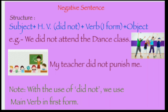Now see the structure for a negative sentence in past tense. As we have used the second form of the verb, for making it negative we need to convert it back to the first form of the verb with the helping verb 'did not.' Structure: Subject + did not + first form of verb + object. For example: 'We did not attend the dance class.' 'My teacher did not punish me.' With 'did not,' the main verb is always in the first form.